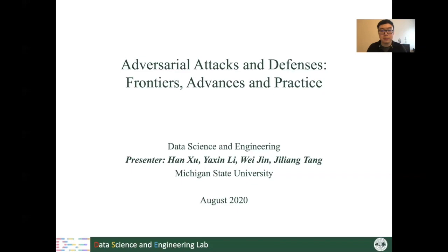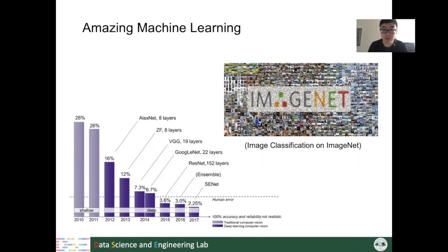As we all know, machine learning models have made so many great accomplishments in recent years. For example, for an image classification task under the ImageNet dataset, from the year 2014 and 2015, the best machine learning models have already outperformed humans.